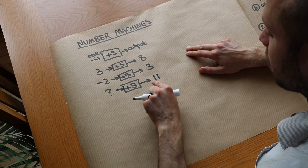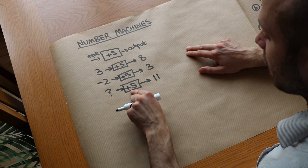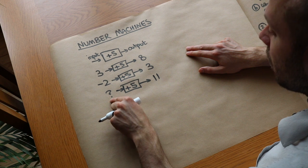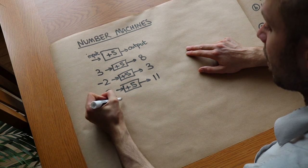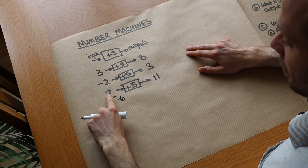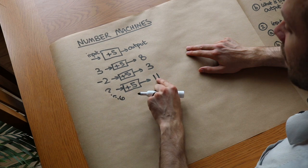So we do 11 and we subtract 5 to go backwards. 11 minus 5 will give you 6, so this number here will be 6. And that works because 6, when you add 5 to it, gives you 11.